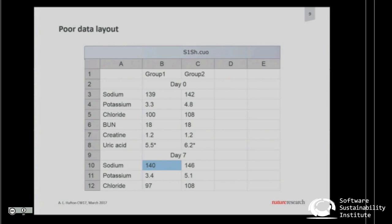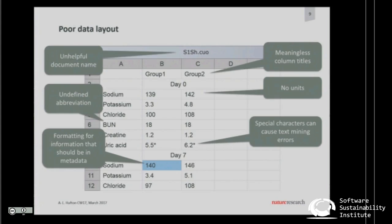We don't know what the groups are. Those are all really good points. So the colors are definitely a problem. We've got undefined abbreviations in the chemical names. We've got meaningless column names. We've got no units — and if you have units, the better thing is to put them in a separate column or a separate encoding. And it's an unhelpful document name — CUO is an ancient Amiga spreadsheet format, so no one's going to be able to open it in the first place.